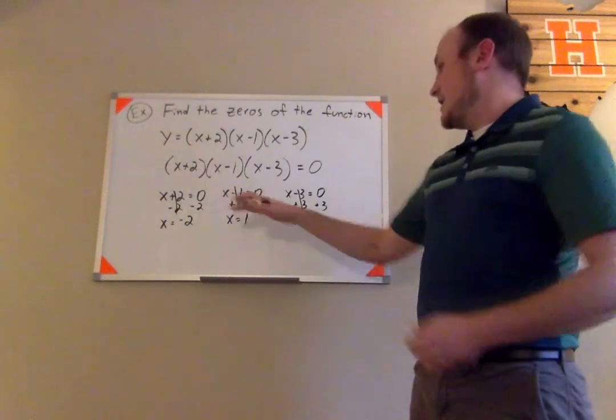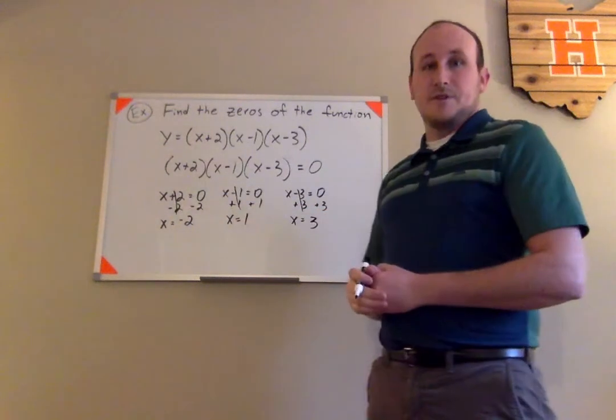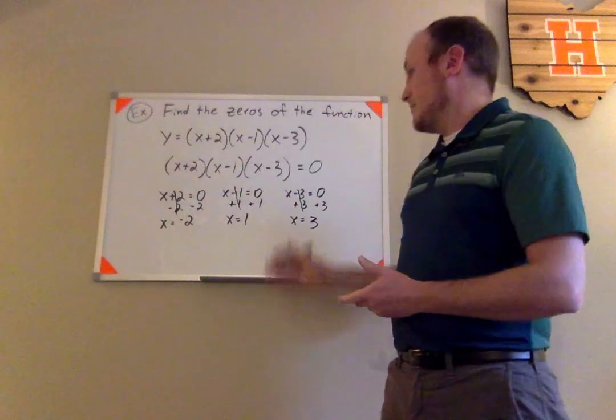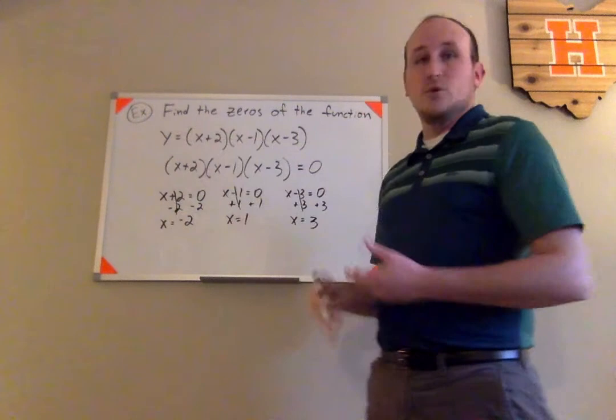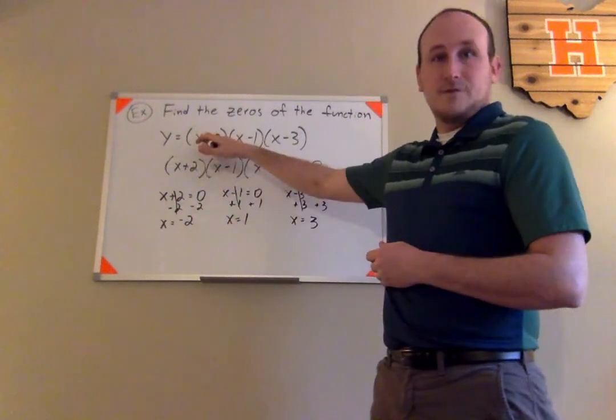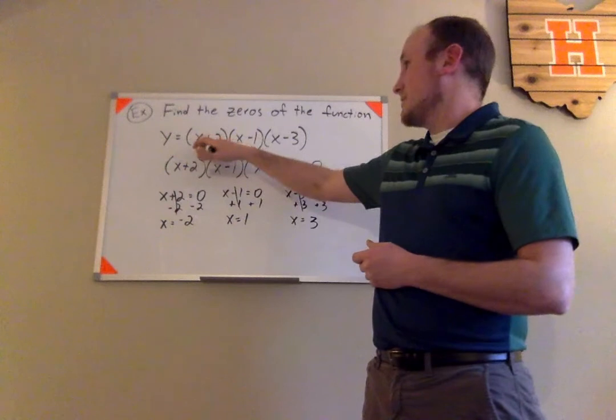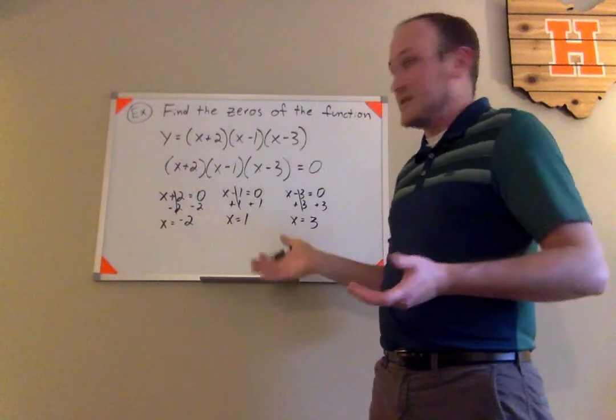So here we have the three zeros of the function. If you wanted to test them, plug them back into the original, the product of this whole thing would become zero. Negative 2 would make this first factor equal to zero. And then zero times whatever these are would be zero.